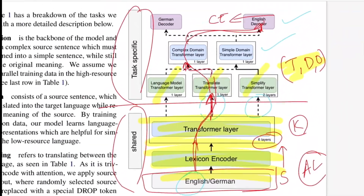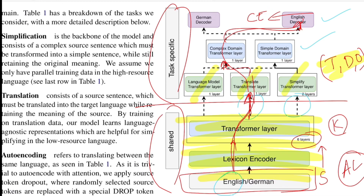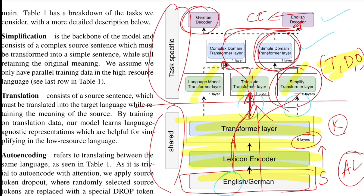During inference, given a sentence from a low-resource language to simplify, you pass it through the shared encoder, then the simplification transformer layer, then the simple domain layer, and finally choose the language-specific decoder (e.g., German), traversing the network to get the simplified output.